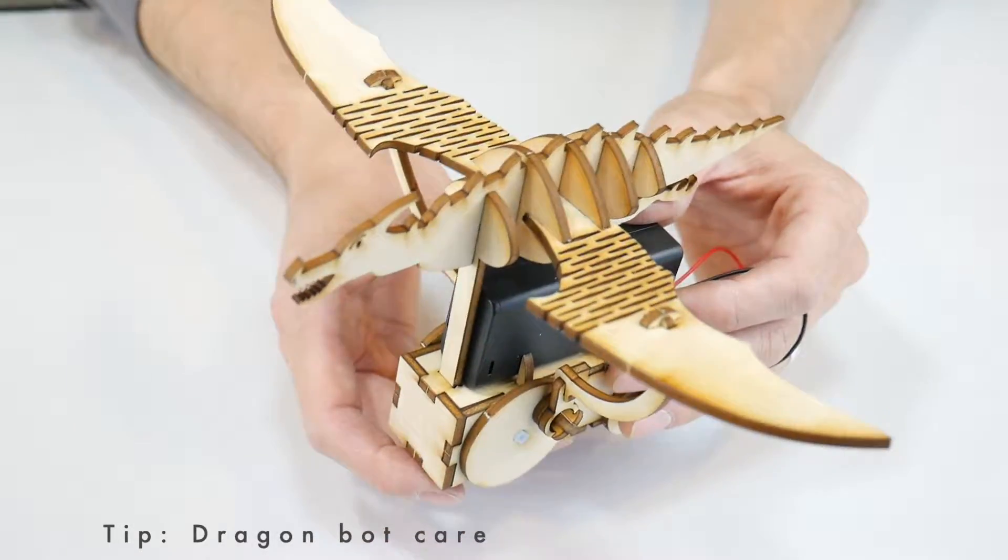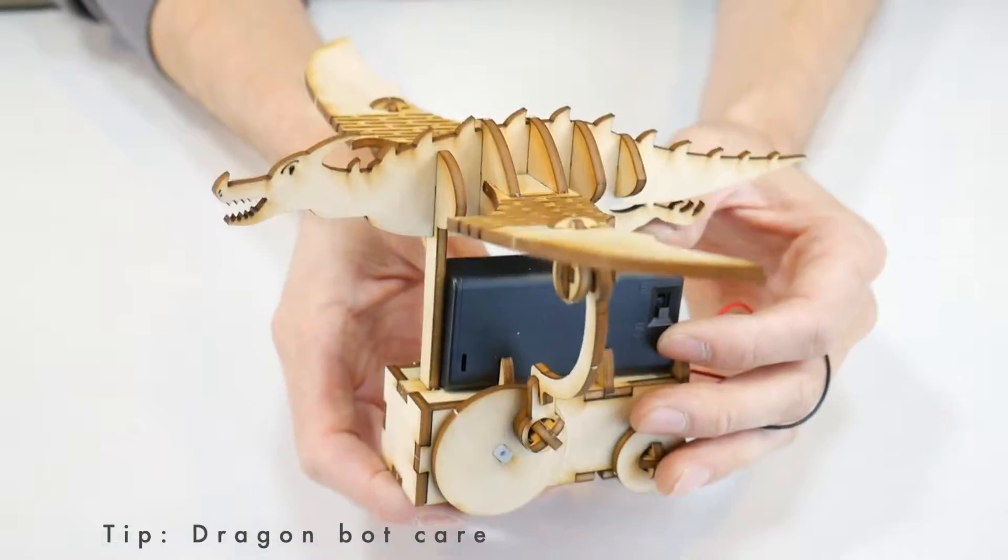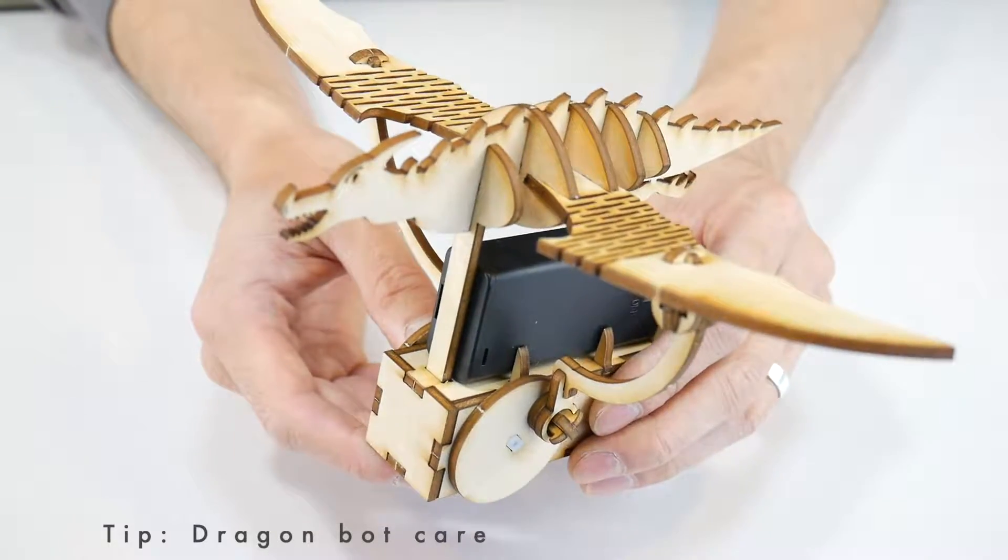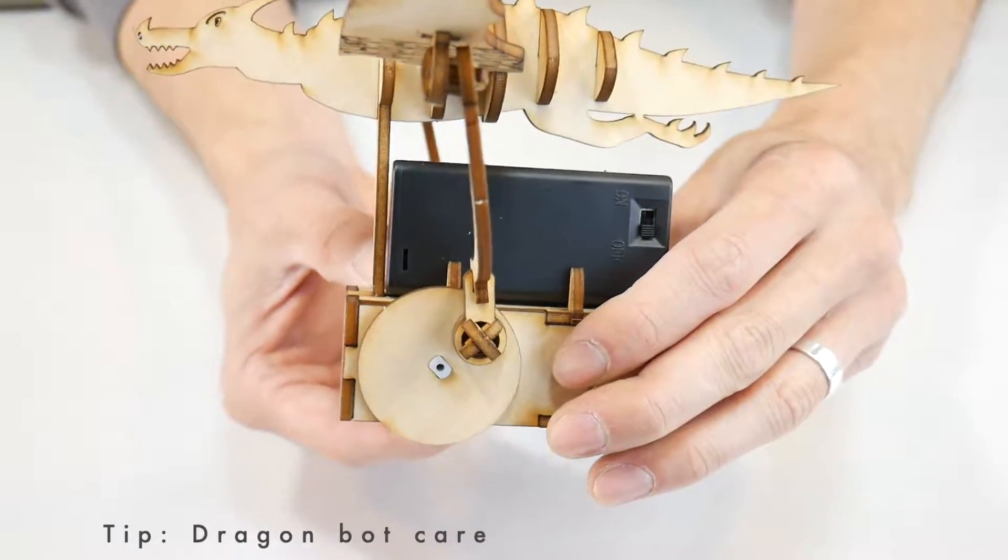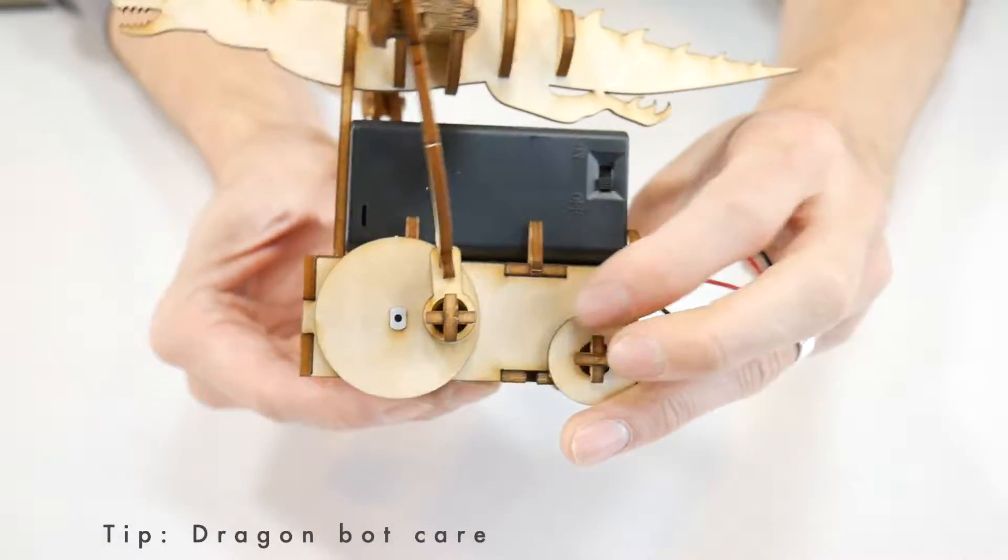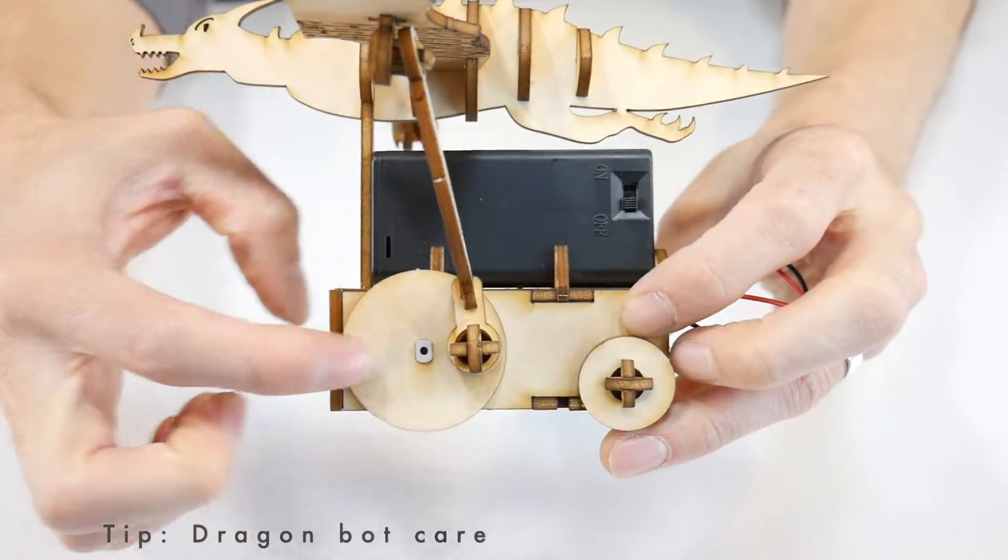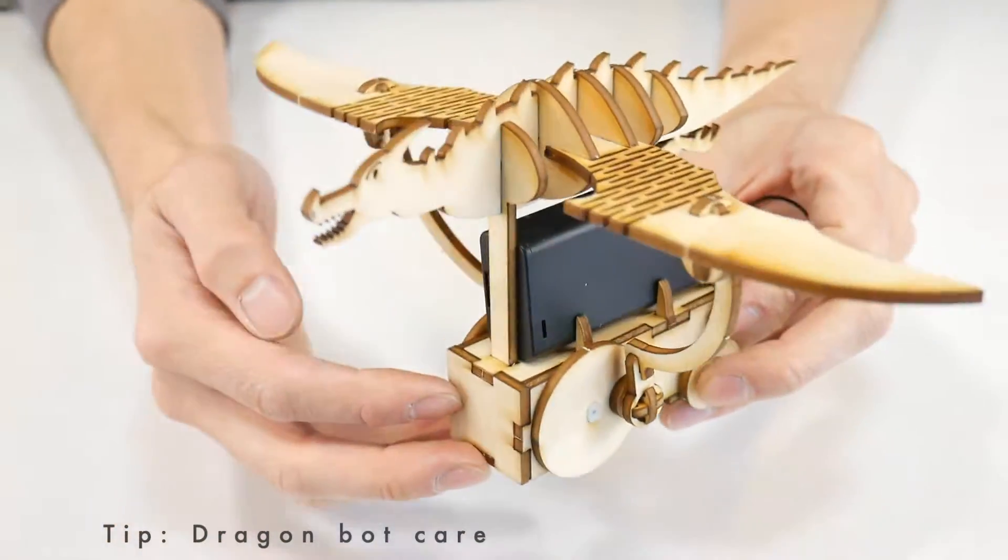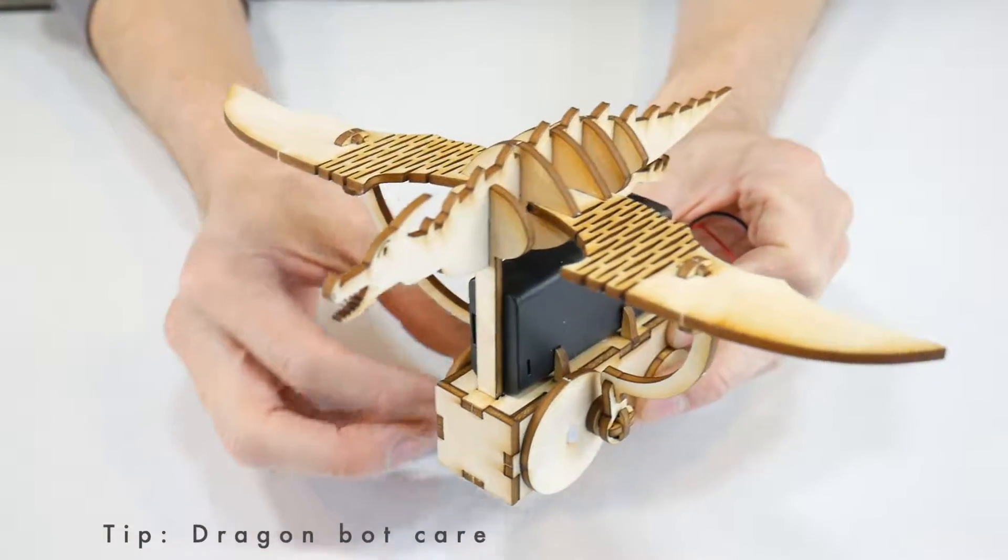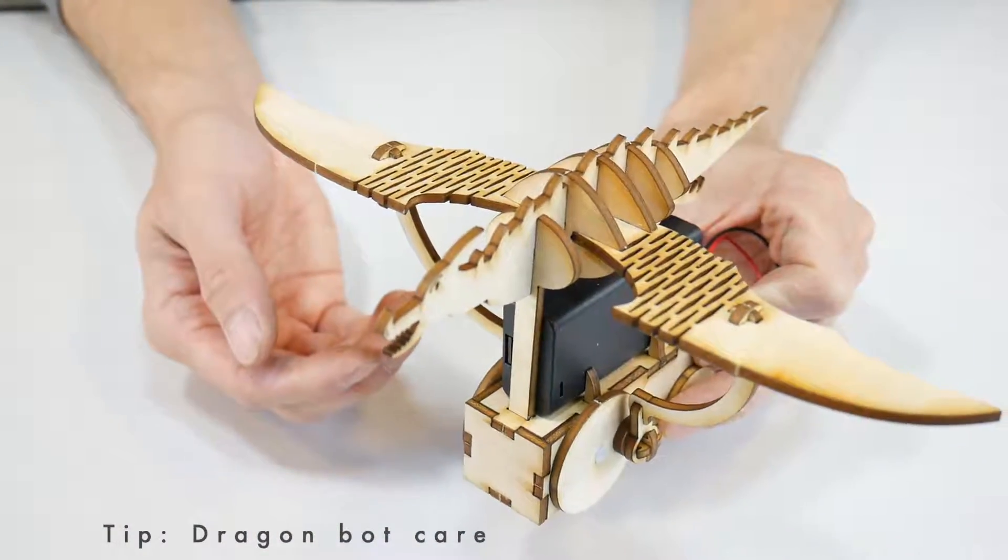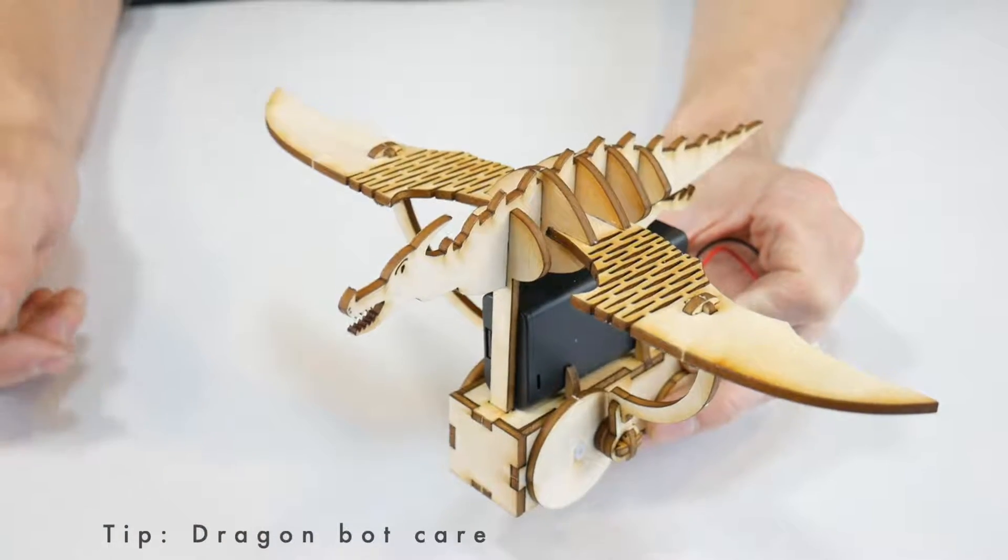Before getting into troubleshooting I want to share one important tip about this particular robot. When you're not using it rotate the drive wheel so that the connector is positioned in the middle of the motor housing like this. That's going to set the wings to a neutral position so that the connector is neither pushing nor pulling on it and that will just help with the longevity of your robot.